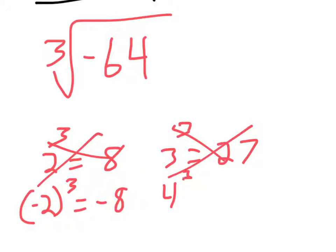What about 4? If you cube 4, 4 times 4 is 16, and 16 times 4 makes 64. So this is the magic one.